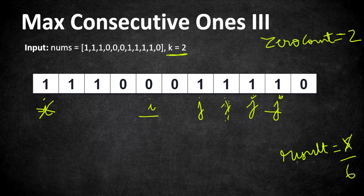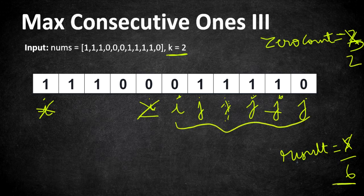Extending j to the last element, which is a 0, makes zero_count 3 again. We move pointer i to the next element and decrement zero_count by 1 for the zero that left the window. Zero_count returns to 2 and the length between i and j is still 6. Shrinking the window further would only reduce the length, so 6 is the maximum output.